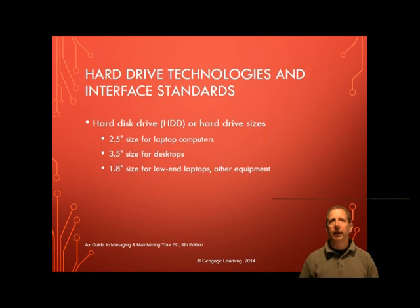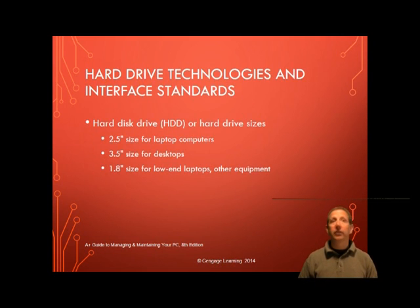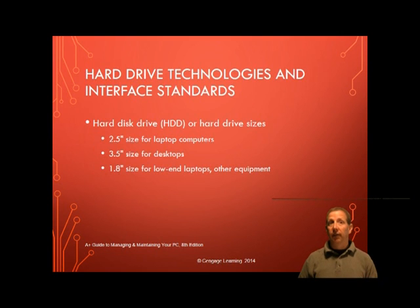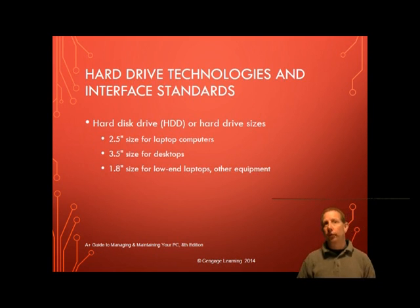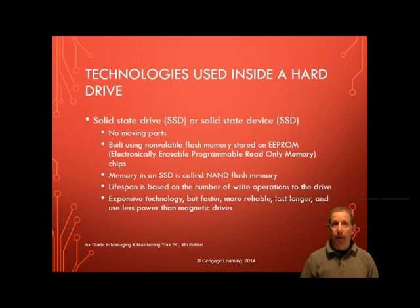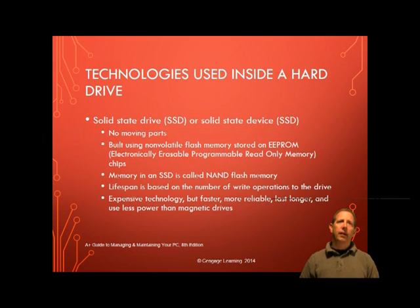In this part of the lesson you're going to learn about the technologies used inside a hard drive and about the various standards, cables, and connectors that a drive might use to interface with the computer. The two types of hardware technologies used inside the drive are solid state and magnetic, and some drives use a combination of both technologies. A solid state drive, also called SSD, is called solid state because it has no moving parts. These drives are built using non-volatile memory, which is similar to what we use for a USB flash drive.